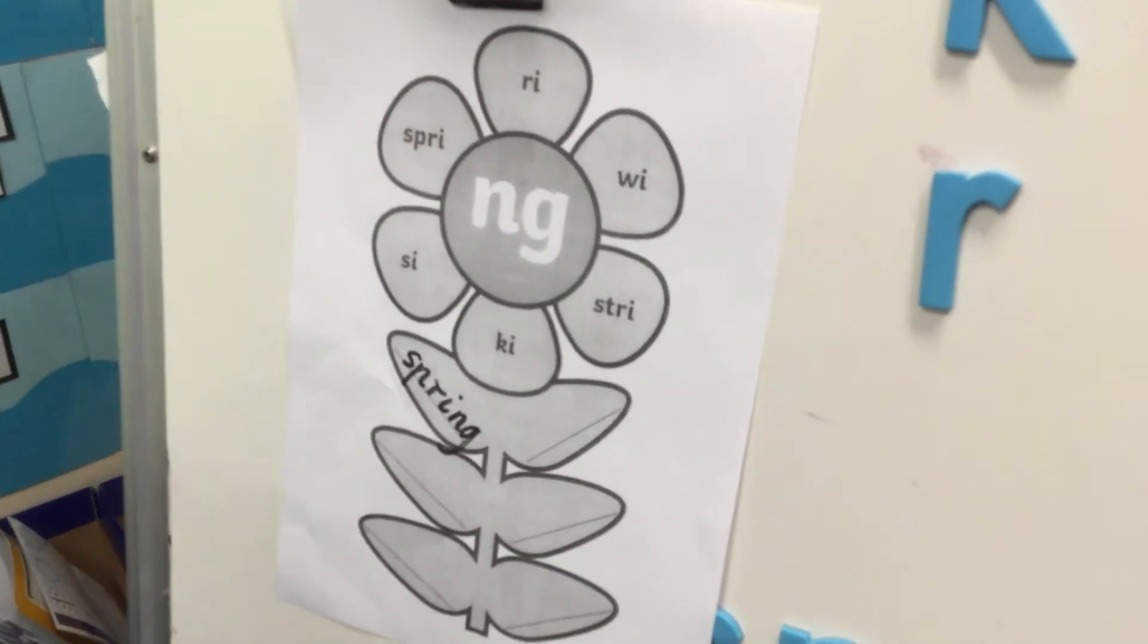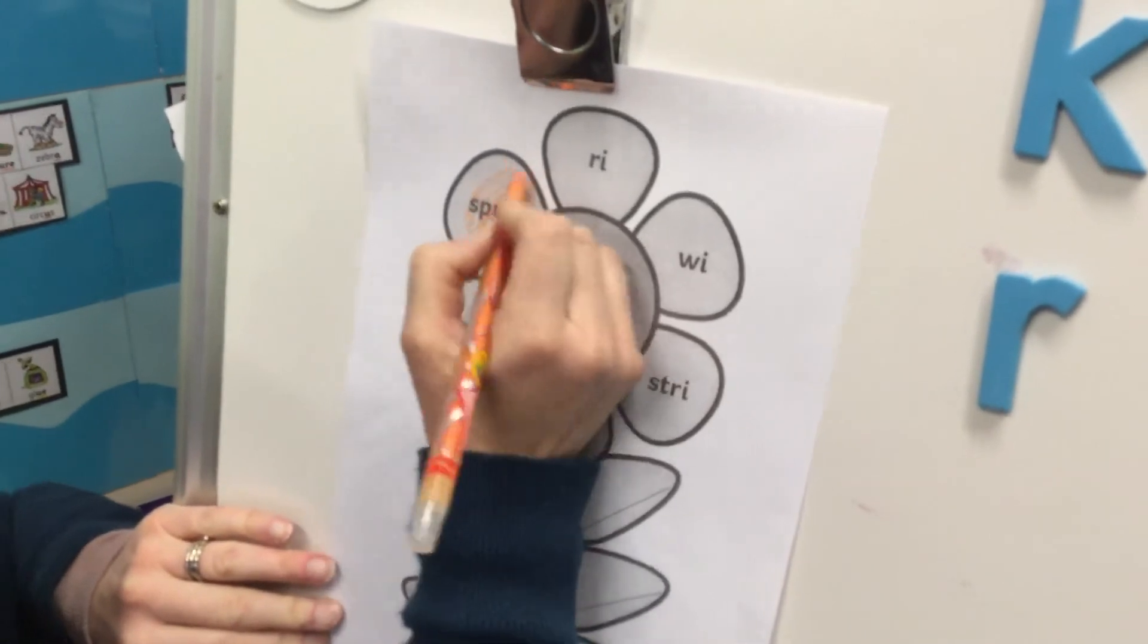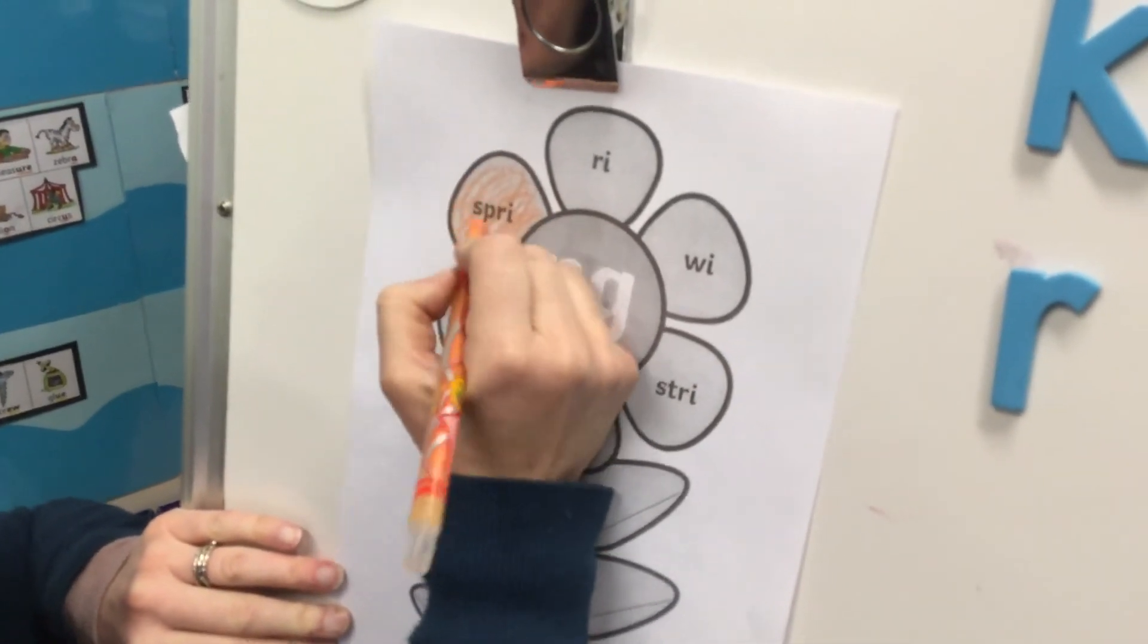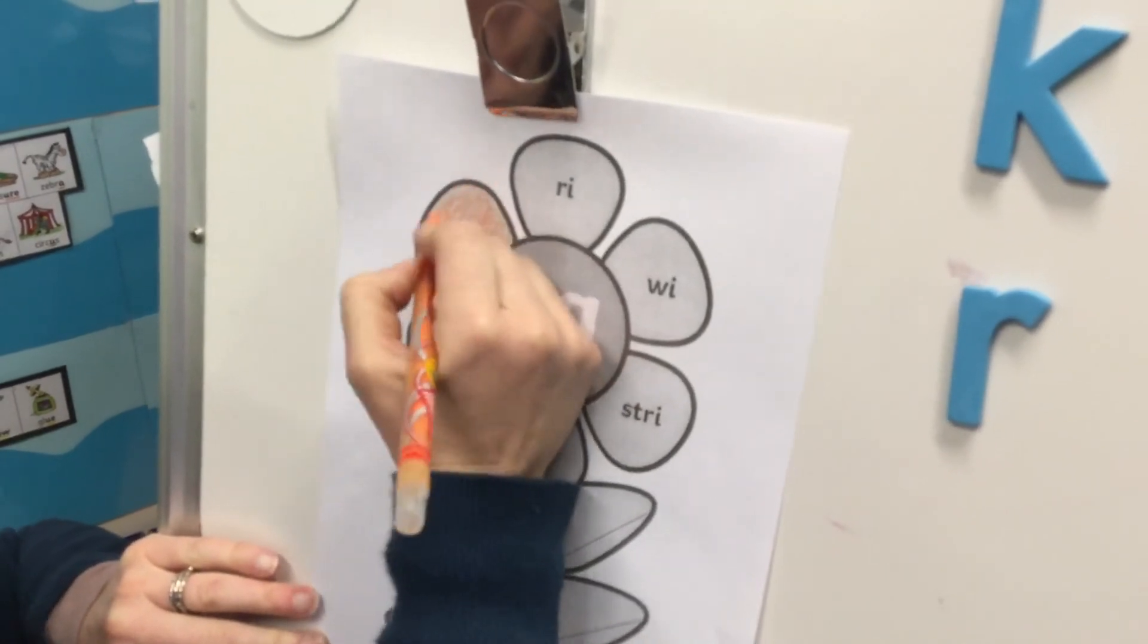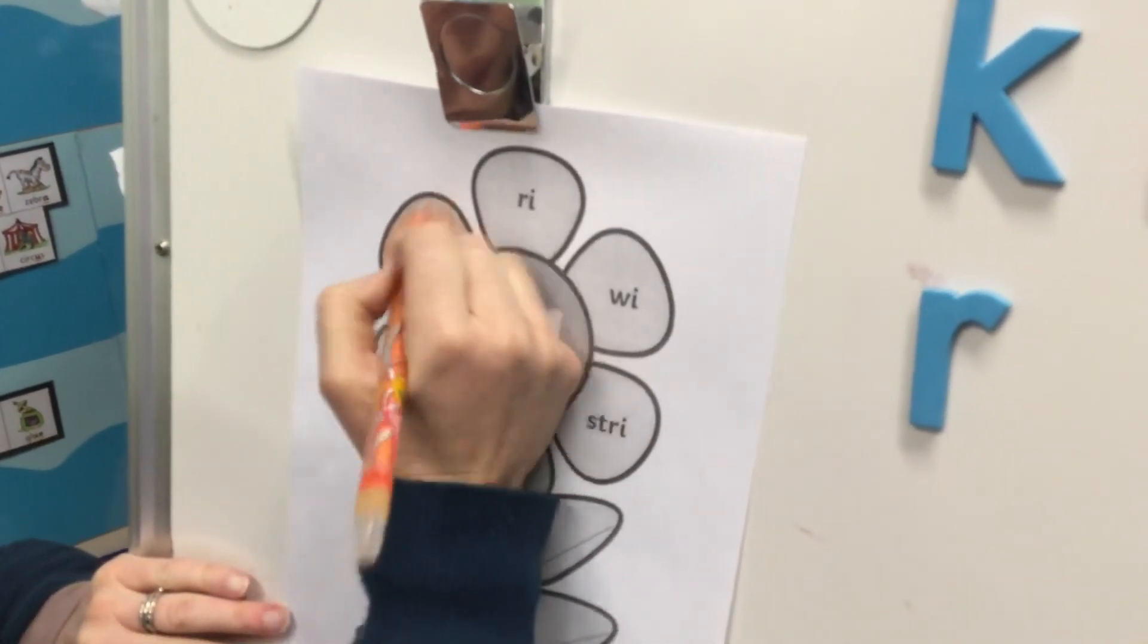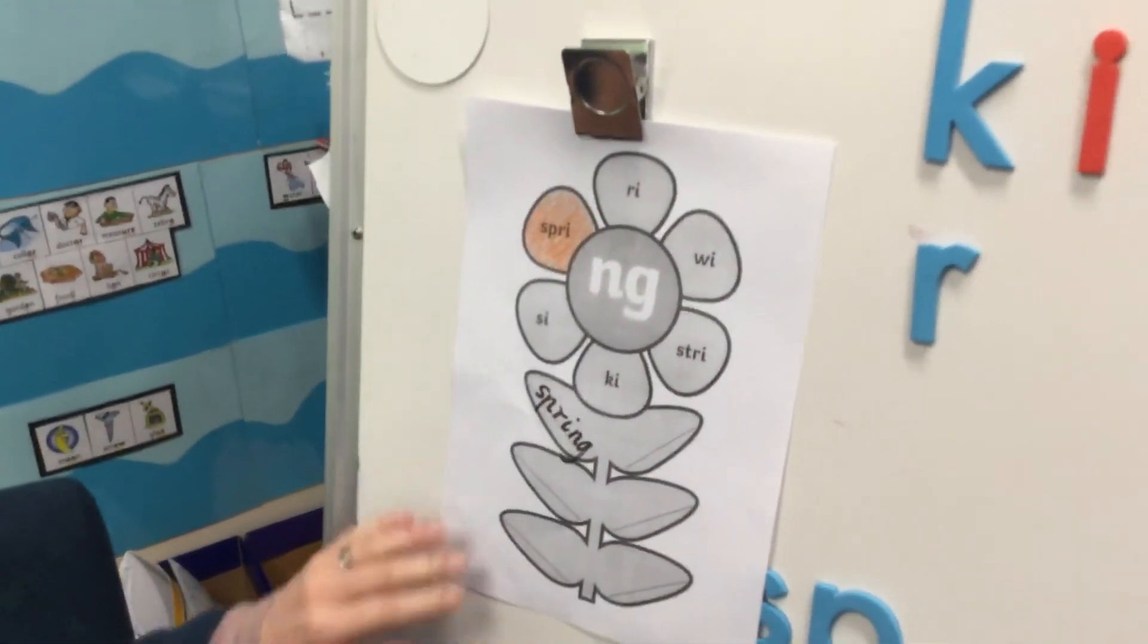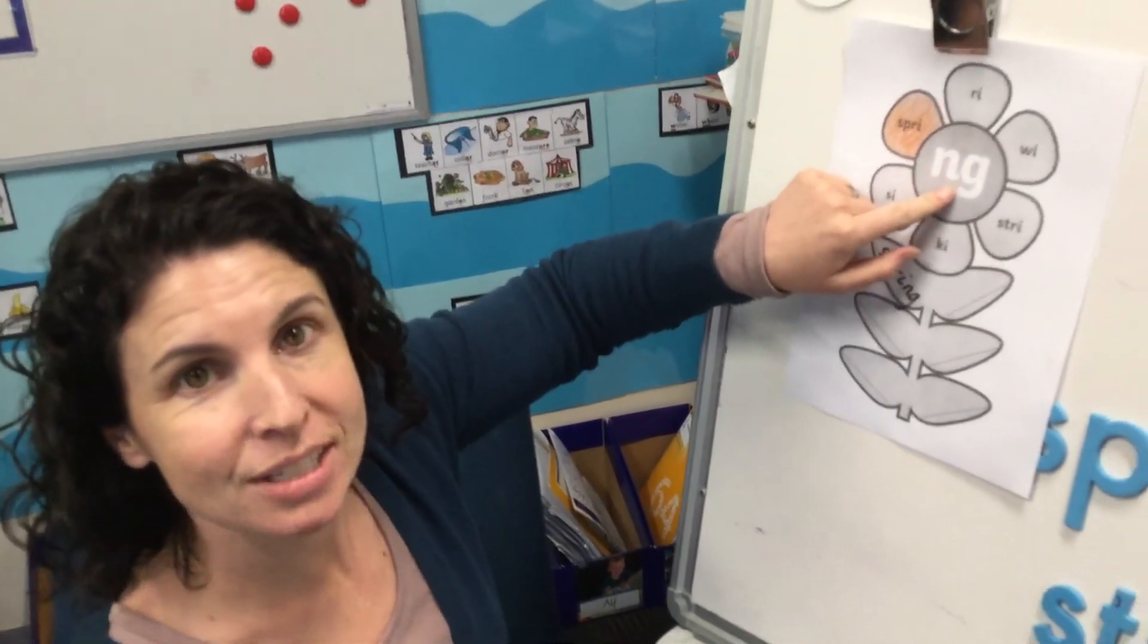And then do you remember what to do once you've worked out that petal and you've added the digraph to it? You get to color it in. And if you want to draw the pictures around the flower you can, or if you want to cut the flower out and stick it on your window you can do that too. Or you could stick it in your book and make it look gorgeous. But you're going to slowly go around and put that NG digraph with all those starting sounds. Good luck. See you later preps.